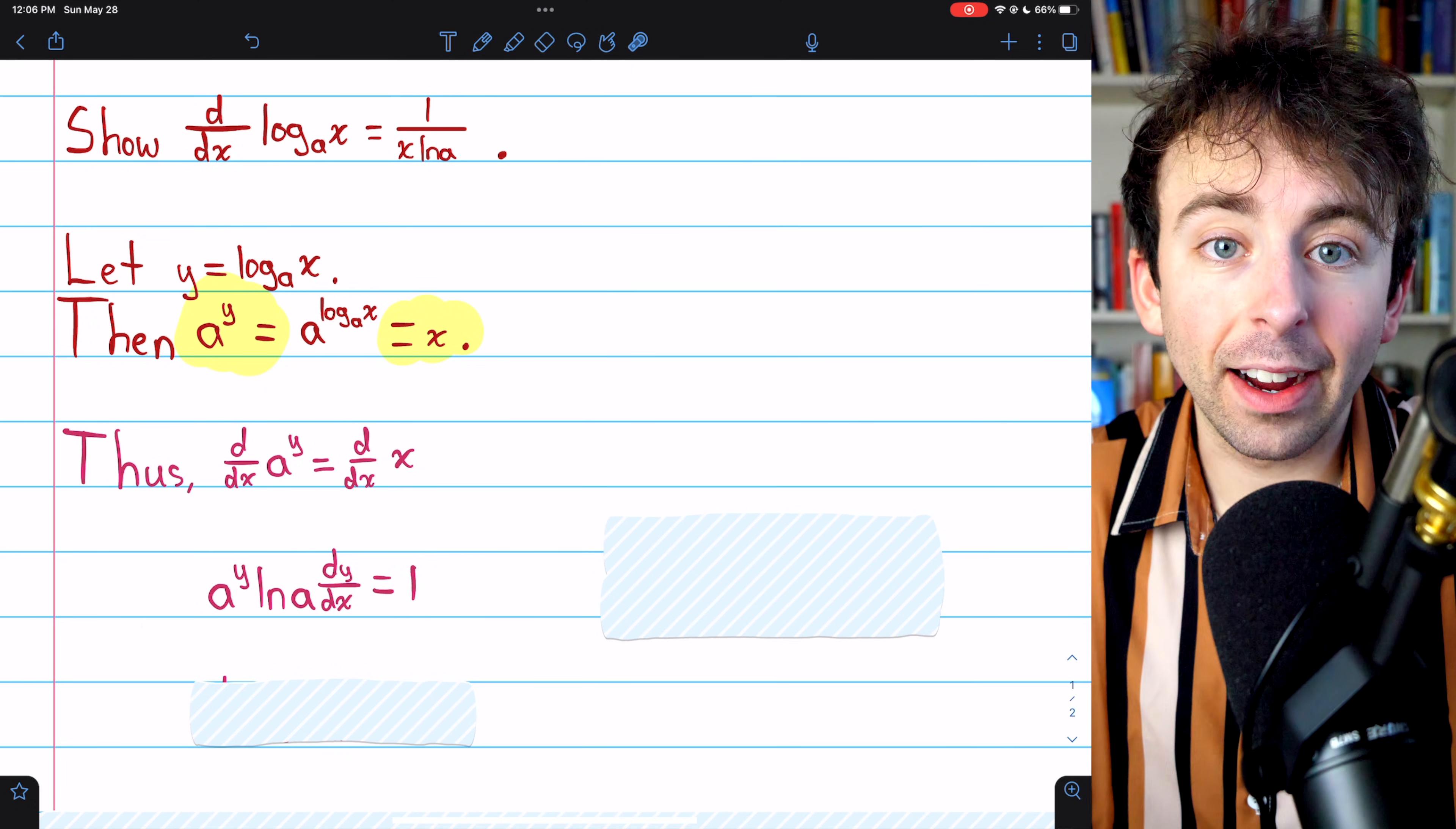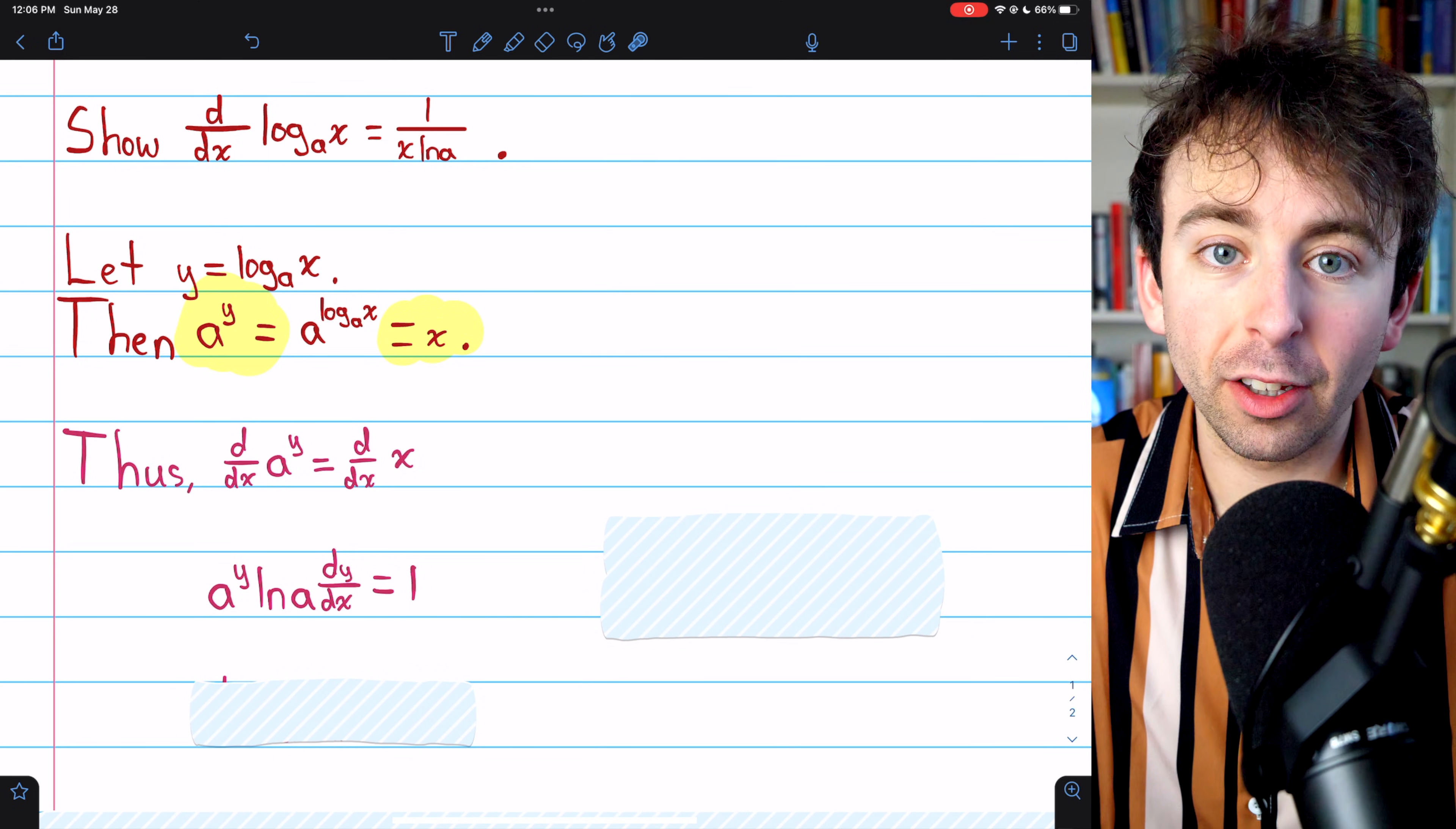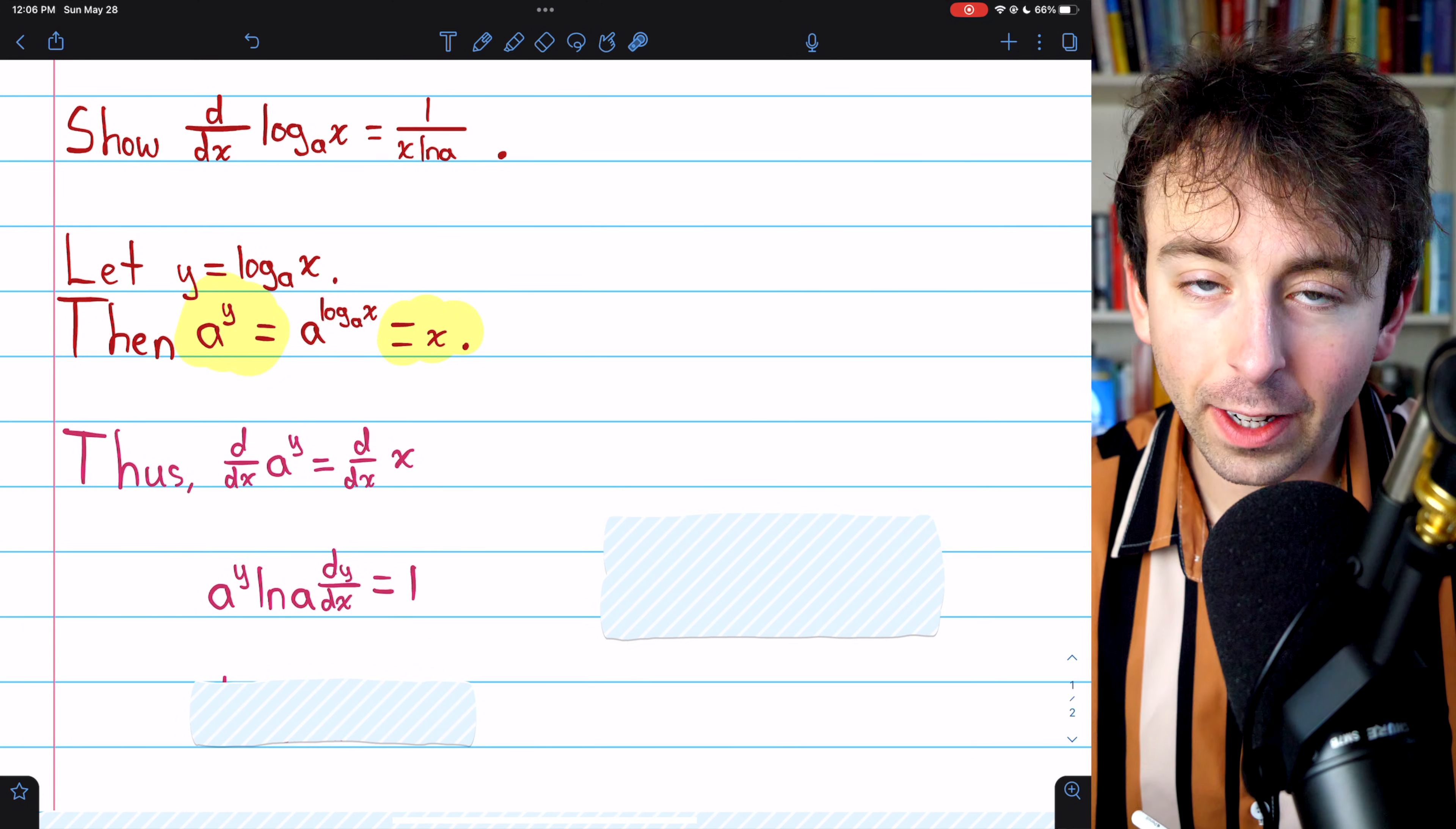On the left, we need to take the derivative of the exponential function a to the y. Link in the description to my lesson on derivatives of exponential functions. Here's how it works. The derivative of a to the y is just a to the y times the natural log of a.